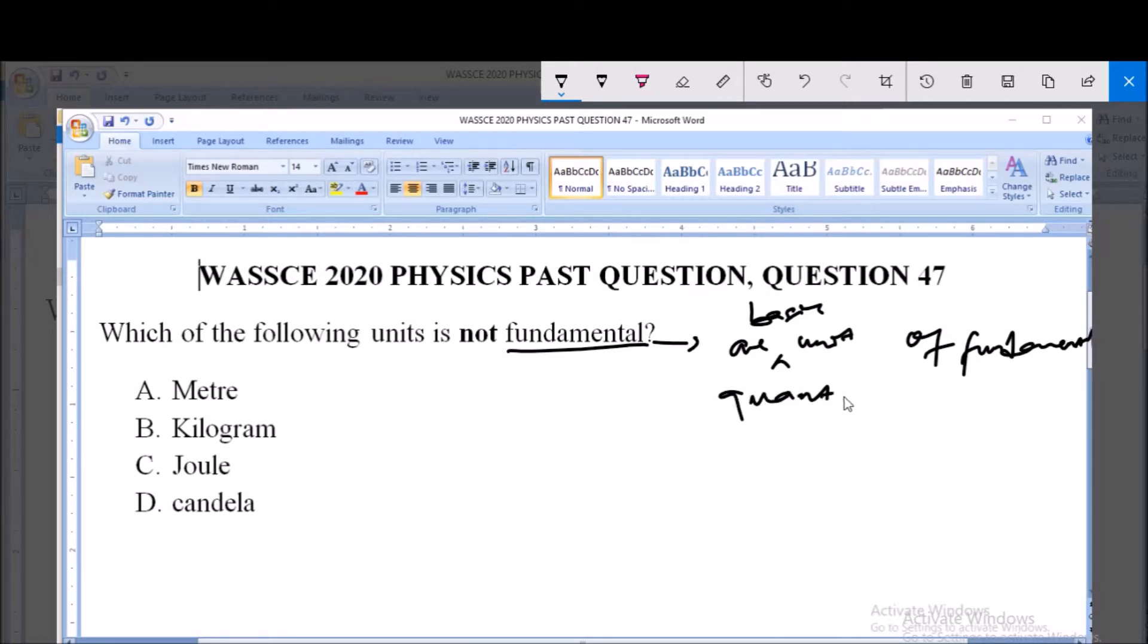Fundamental quantities, as we know, are basically quantities from which other quantities can be derived. So in other words, fundamental units are units from which other units are derived. Now these fundamental units are units of fundamental quantities.